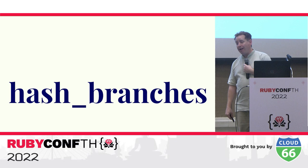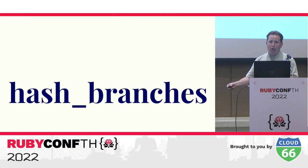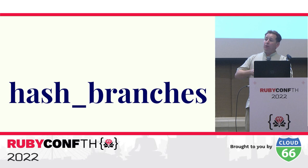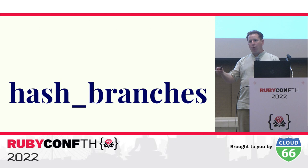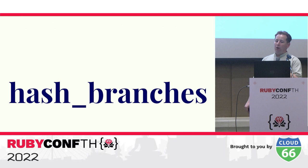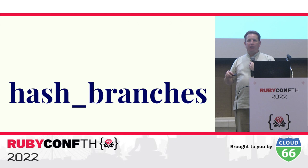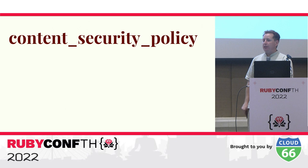Roda uses a single route block by default, meaning all routing must happen in a single Ruby file, which is only appropriate for fairly small web applications. Roda has multiple ways of splitting the routing tree block into multiple Ruby blocks stored in separate files to support larger applications. The most common plugin for this is called hash_branches, which uses a separate block and file for each top-level branch in the routing tree, and for very large web applications hash_branches can be used in nested format to support arbitrarily complex routing trees.